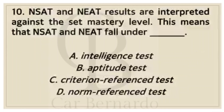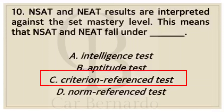Number ten: NSAT and NEAT results are interpreted against the set master level. This means that NSAT and NEAT fall under blank. Letter A: Intelligence test. Letter B: Aptitude test. Letter C: Criterion reference test. Letter D: Norm reference test. Answer: Letter C, Criterion reference test.